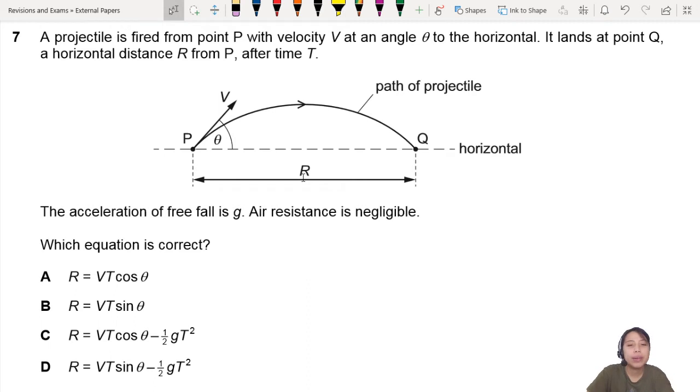You have to stay calm and look at the equation. Air resistance is negligible, which is great because we don't really know how to write SUVAT equations for air resistance yet at A levels. Which equation is correct? You notice all the equations start with R. What is R? R is our horizontal displacement here, also known as S of X, displacement in the horizontal.